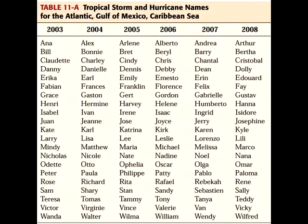Hurricanes are named in alphabetical order without the letters Q, U, X, Y, and Z in a 6-year cycle. The names of severe hurricanes are only used once.